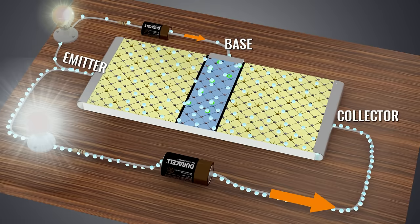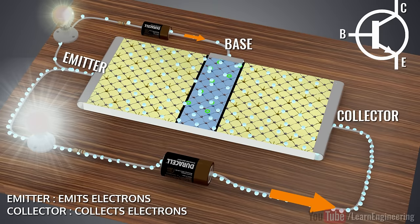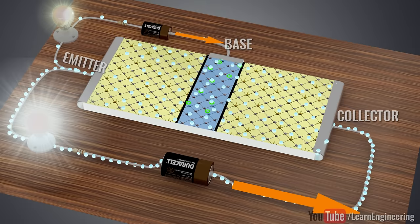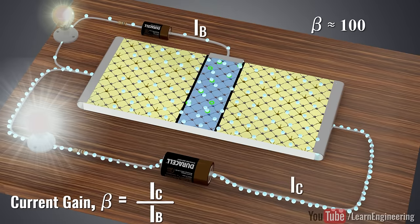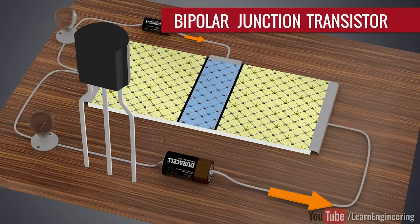If you can increase the base current, the collector current will increase proportionally. This is a clear case of current amplification. The kind of transistor we have discussed is called a bipolar junction transistor. Let's replace this representative transistor with a realistic one.